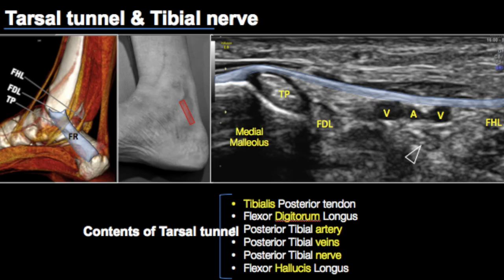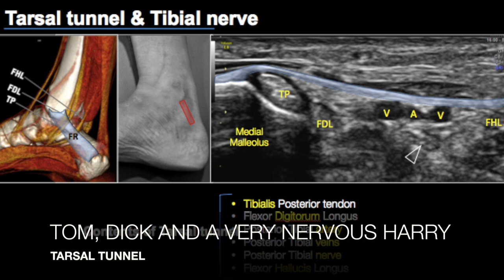The tarsal tunnel is a fibro-osseous tunnel, just like any other fibro-osseous tunnel in the body, which consists of the tibialis posterior tendon, the flexor digitorum longus tendon, the posterior tibial artery, vein, the nerve, and the flexor hallucis longus tendon. We used to remember this as 'Tom, Dick, and a Very Nervous Harry.'